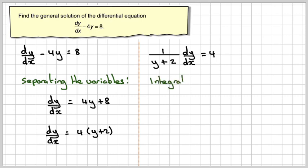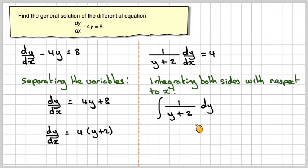We will now integrate both sides with respect to x. So if we integrate this side, we're going to get the integral of 1 over y plus 2 dy, and the integral of the other side, the integral of 4 dx.